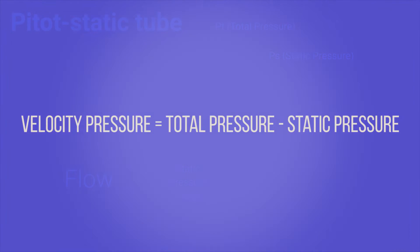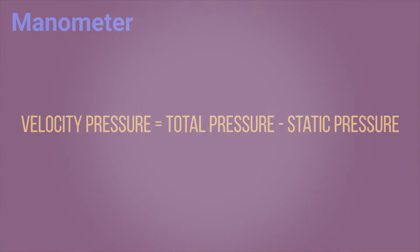Once we have both the total and the static pressure, we can use these two parameters to calculate the velocity pressure, and from there we can find the velocity of the air inside the wind tunnel.